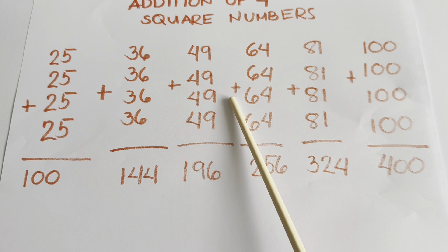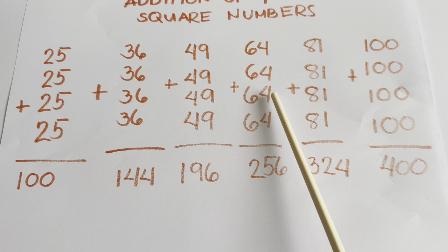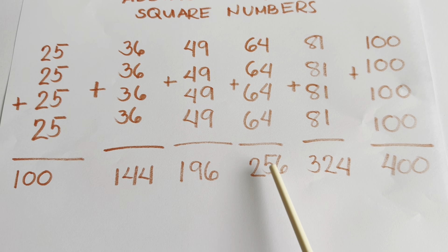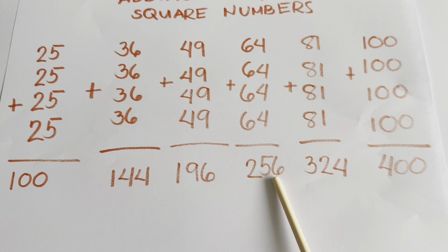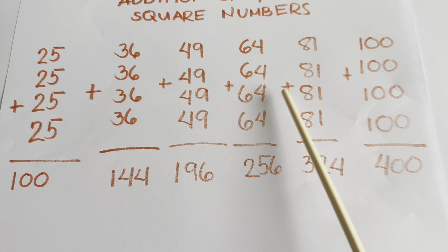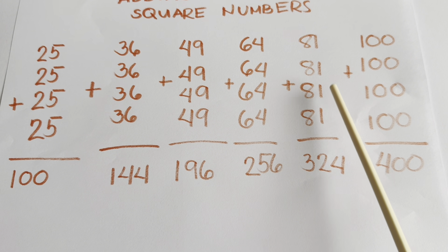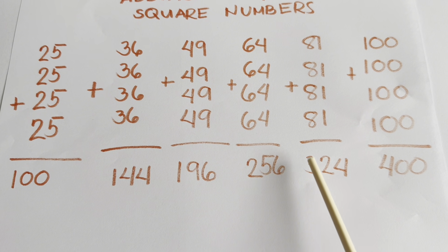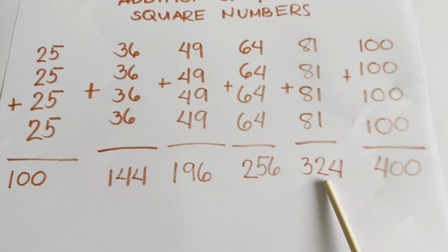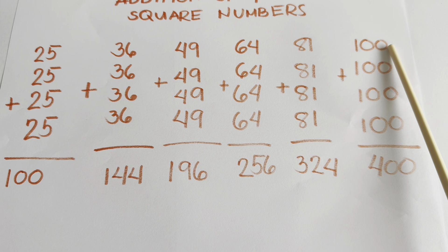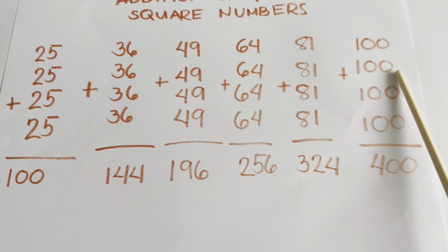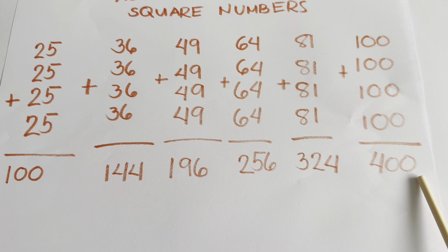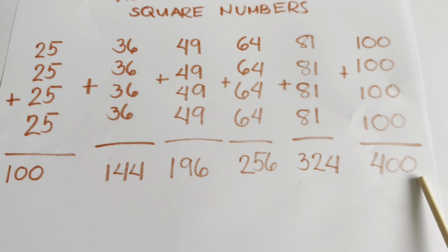64 plus 64 plus 64 plus 64 is equals to 256. 81 plus 81 plus 81 plus 81 is equals to 324. And lastly, 100 plus 100 plus 100 plus 100 is equals to 400.